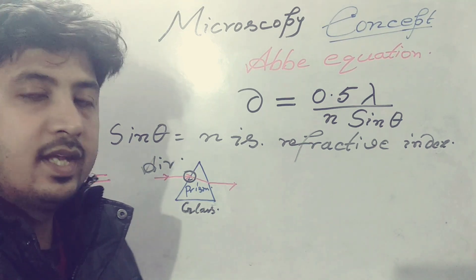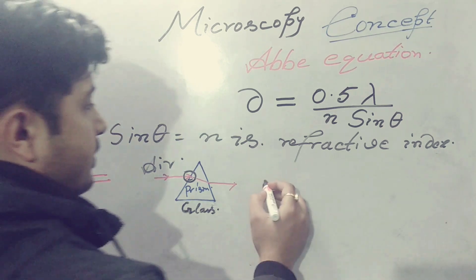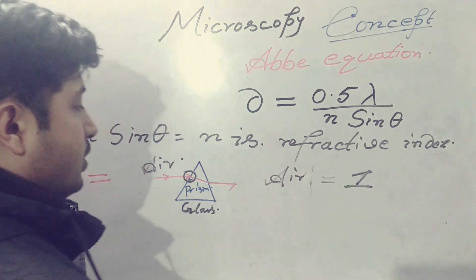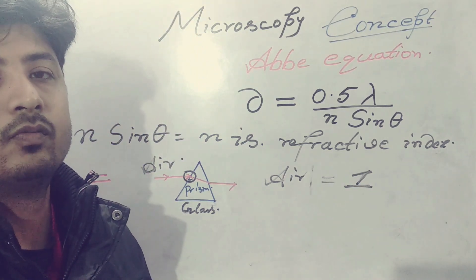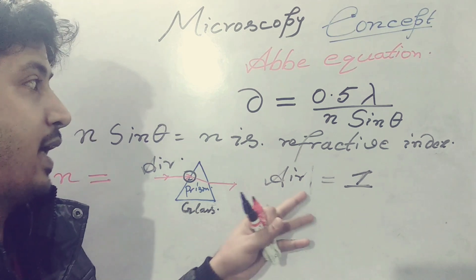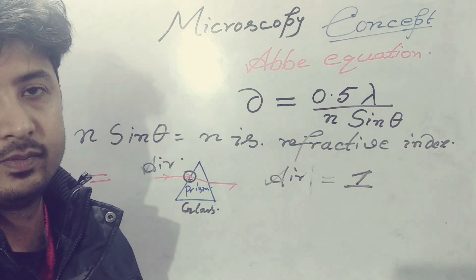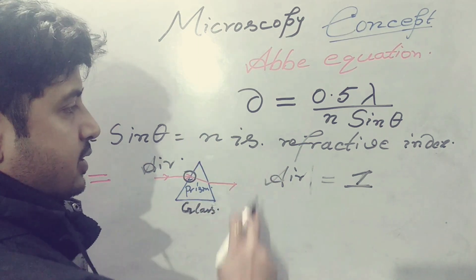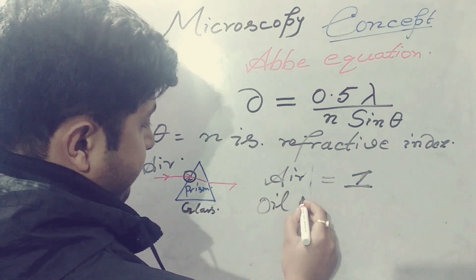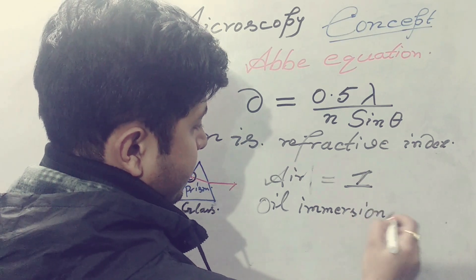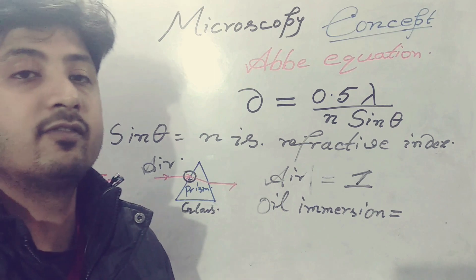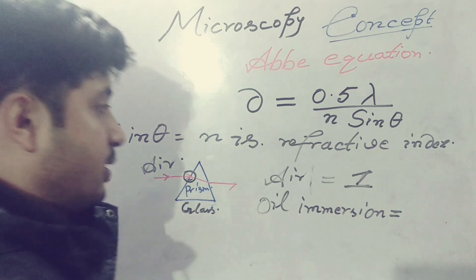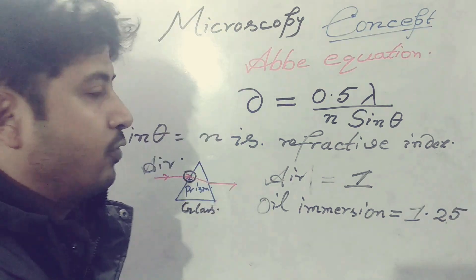Any sample passing light through it in air medium has a maximum n of 1. However, you can increase the refractive index by using oil immersion. Through oil immersion you can increase the value of refractive index — that is, n becomes 1.25.